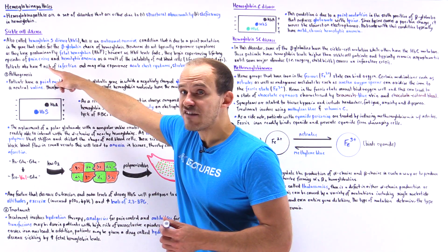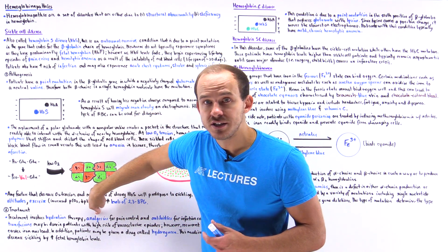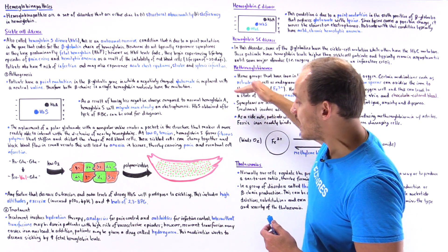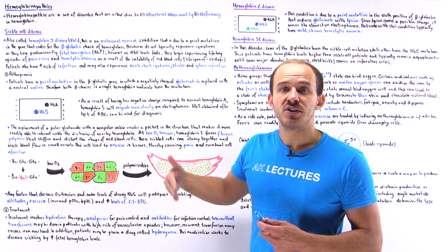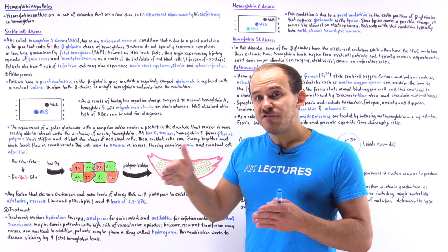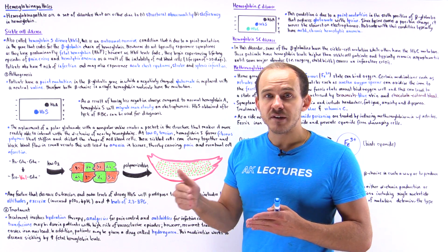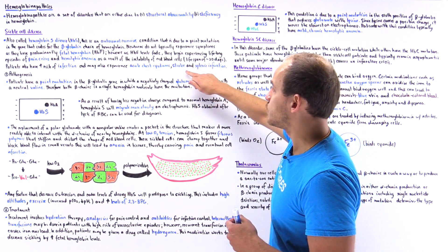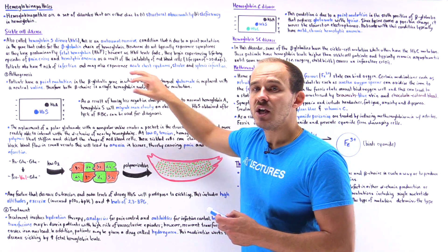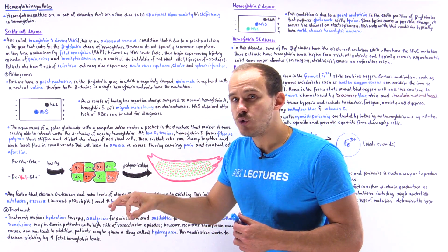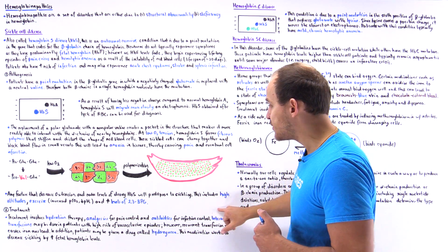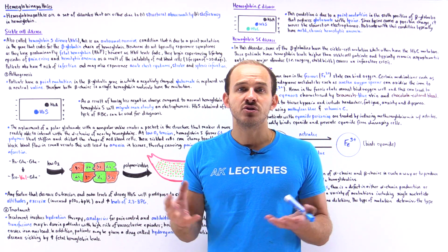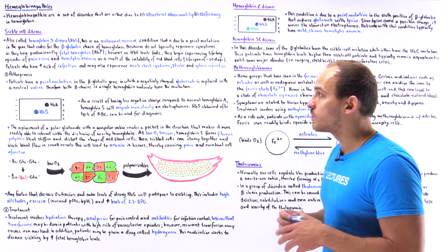If patients have pain, you want to control it with analgesics. If they are at increased risk of infection due to splenic infarction, give them antibiotics to prevent infections. If patients are at increased risk of vaso-occlusive episodes that can lead to stroke, infarction, or acute chest syndrome, you want to transfuse them. Intermittent transfusions can be done, but you don't want to transfuse too often because that can cause complications such as iron overload.